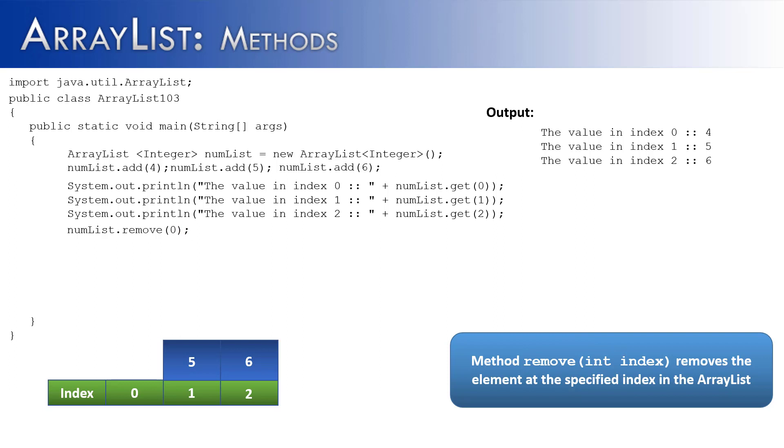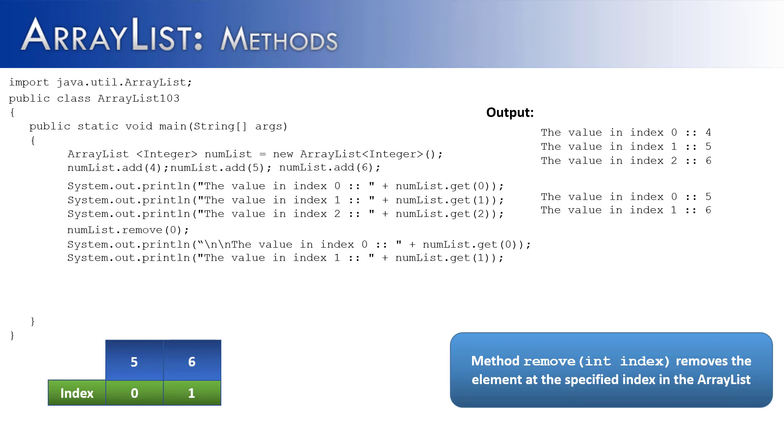So it removes the element, but it doesn't just stop there. It's actually going to resize the ArrayList. 5 gets moved over into the 0th spot, and the 6 gets moved into index 1. And we could show this using the print line method and then the get method, which shows that 5 is at index 0, and it also shows that 6 is at index 1 once the 0th value was removed. That 4 was removed.